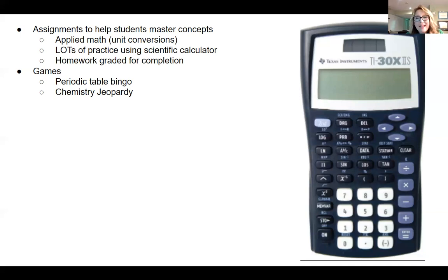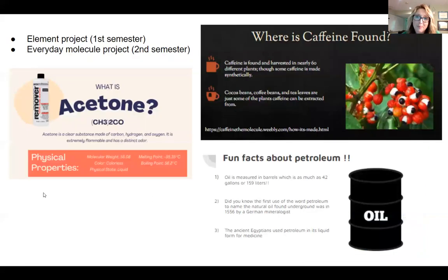We also play lots of games in my class. For example, when we're learning about the organization of the periodic table, after I tell the students how the periodic table is organized and as we talk about the different parts of the periodic table, we review by playing a game of bingo. And so whoever was paying attention, they're going to have an advantage in playing that game. And at the end of the year, we review all the content that we've learned in the class by playing Chemistry Jeopardy.